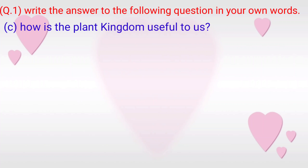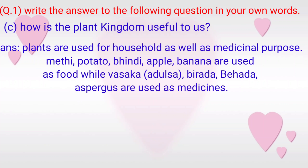C. How is the plant kingdom useful to us? Answer: Plants are used for household as well as medicinal purposes. Methi, potato, bendi, apple, and banana are used as food. Vasaka, dulce, birada, behada, and asparagus are used as medicines.